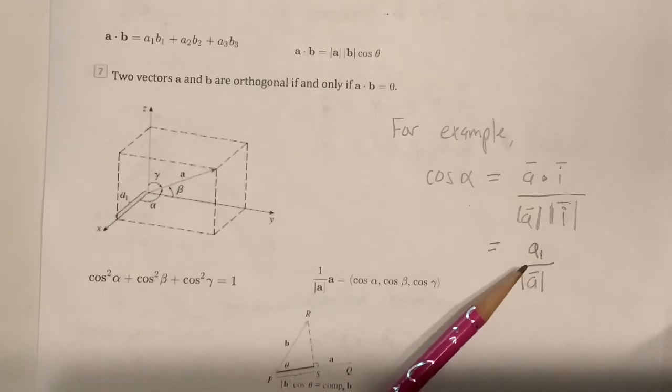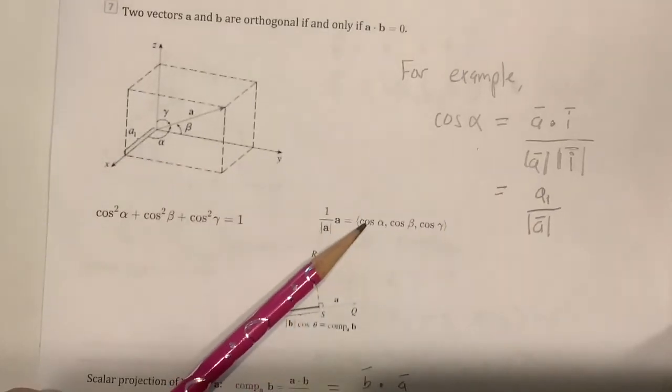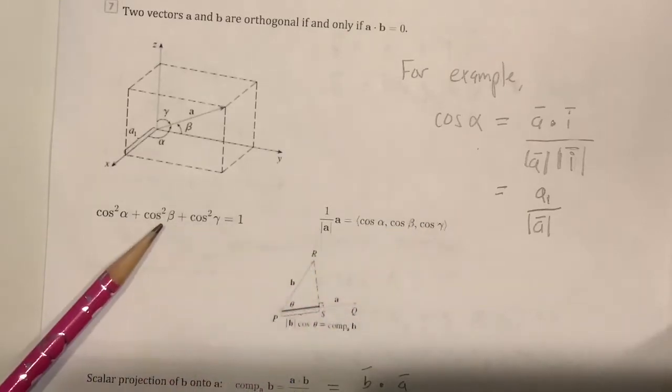which turns out to be a1 over magnitude of a, which is precisely the first component of the unit vector in the direction of a. And that's also why this is true because since this is a unit vector, this has to be true.